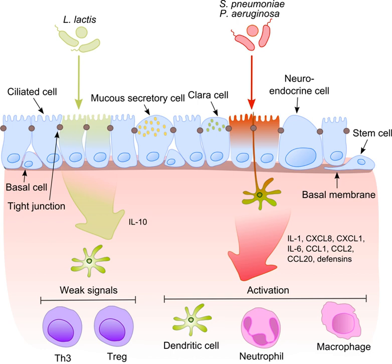Another commensal species, B. thetaiotaomicron, attenuates pro-inflammatory cytokine expression by promoting nuclear export of NF-κB subunit RELA through a peroxisome proliferator-activated receptor gamma (PPAR-γ) dependent pathway. PPAR-γ targets transcriptionally active REL-A and induces early nuclear clearance, limiting the duration of NF-κB action. The balance between pathogens and commensals is extremely important in the maintenance of homeostasis in the respiratory tract.